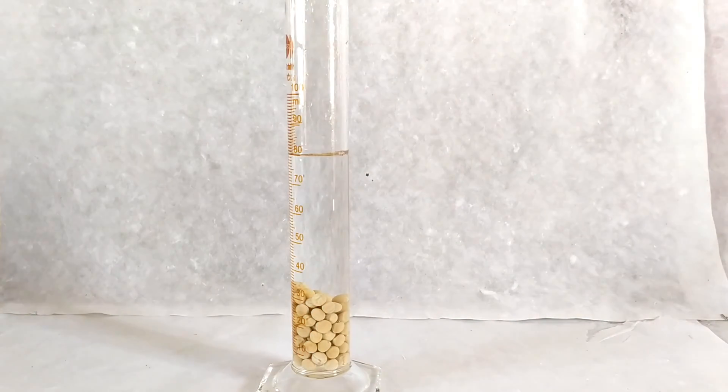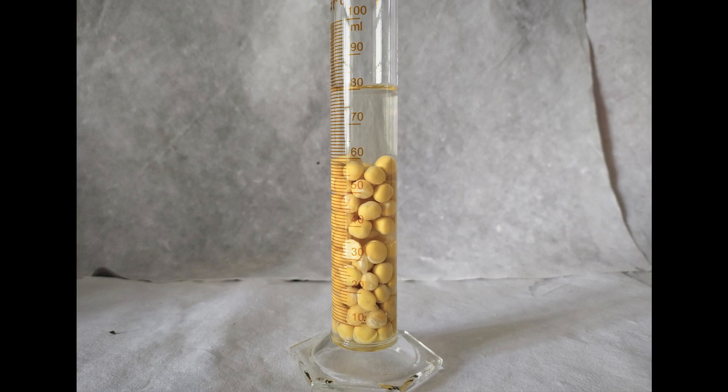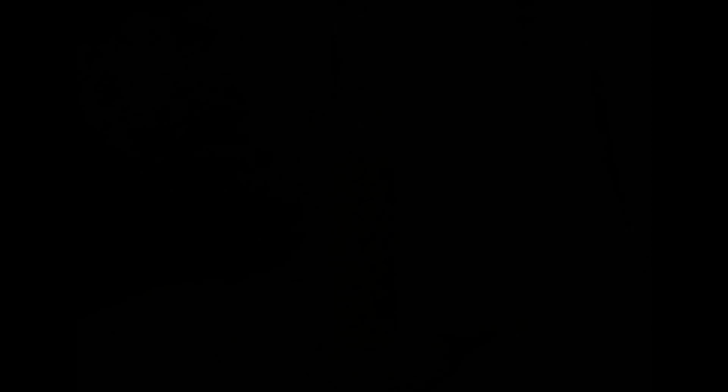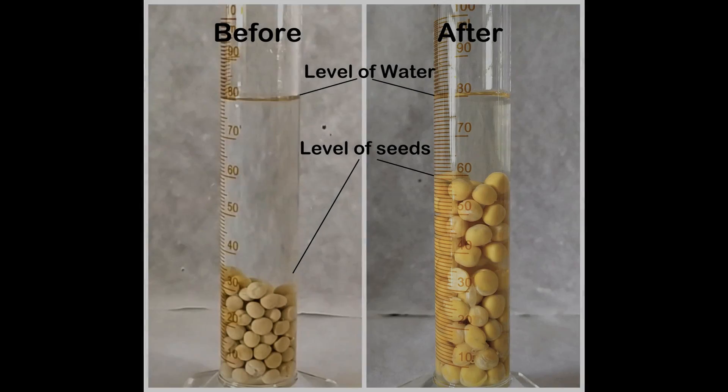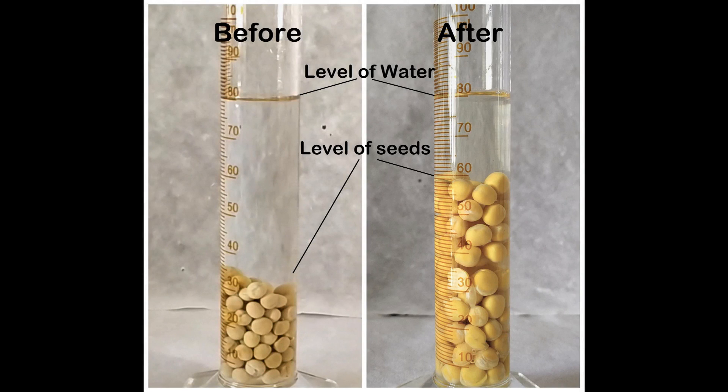Observe the seeds the next day. You'll notice that the overall volume occupied by the seeds and the water in the cylinder remains basically the same. You'll also find that the volume occupied by the seeds in the cylinder have increased about two-fold, while the volume occupied by the water have correspondingly decreased.